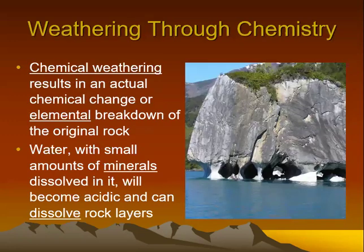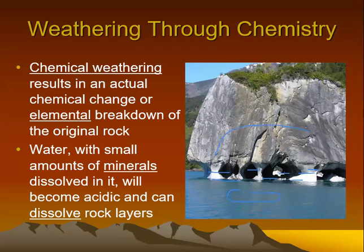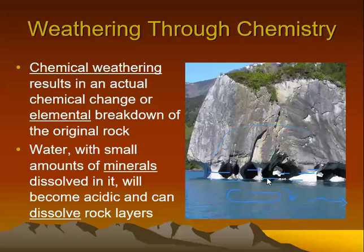Chemical weathering specifically results in an actual chemical change of the original rock itself. Almost always, that's going to involve water. This limestone layer is being affected by acidic lake water, which slowly eats away at the limestone layers, forming cool columns and cave formations — the ultimate dissolving of the rocks. That material is dissolved in the water and then transported and deposited elsewhere.